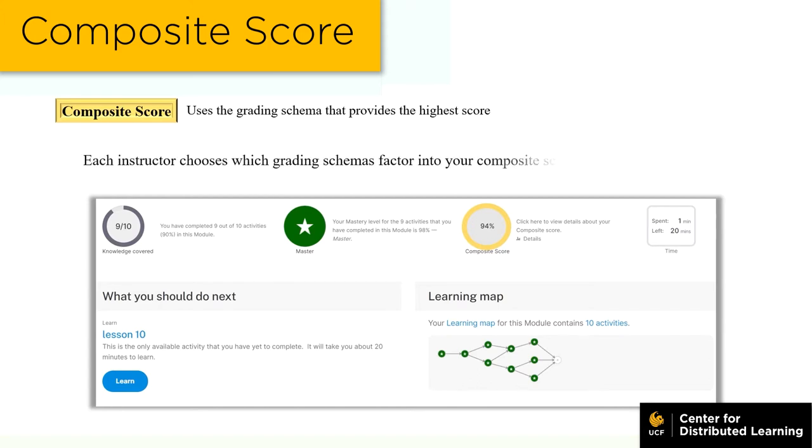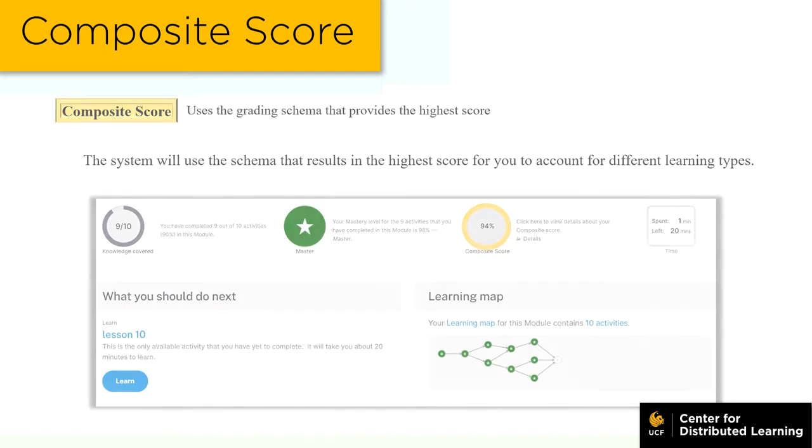Your composite score is calculated by a grading schema selected by your instructor. Each course's grading schemas may differ. We will discuss some common grading schemas in a later video.